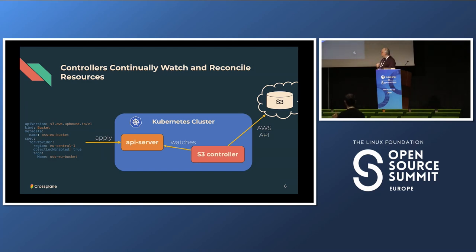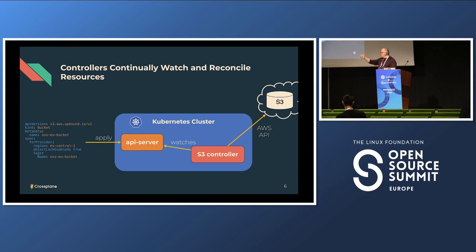When you apply that YAML to your cluster, Kubernetes has an API server. When you install providers with Crossplane, they install a bunch of CRDs — they declare they manage buckets, VPCs, EKS clusters — then a controller starts as a Kubernetes pod watching the API server. When something changes, like a user makes a disk size larger, the controller talks to the AWS API and propagates status back. There's a separation between the controllers and the API server. Everything you have in Kubernetes today — Argo CD, Flux, Kyverno, OPA — you can reuse for your infrastructure.